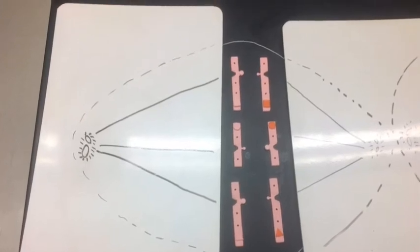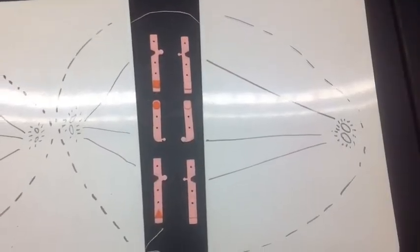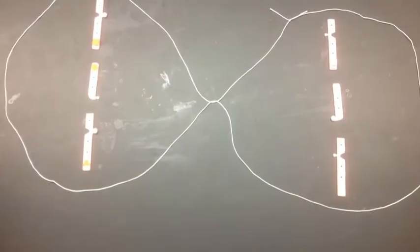During anaphase II, the spindle fibers contract and sister chromatids move toward opposite poles. In telophase II, nuclear envelopes reform around sets of daughter chromosomes.